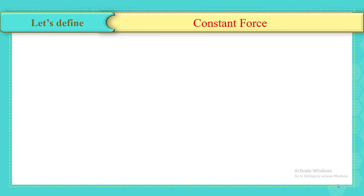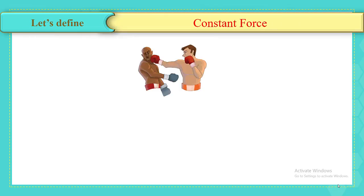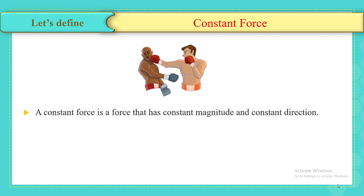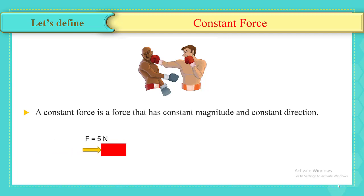First, let's define a constant force. We know that a force is a mechanical action exerted by a body on another one. So we can define the constant force as a force that has a constant magnitude and a constant direction. For example, here we have a force equal to 5 Newtons and it has a unique direction, directed horizontally to the right.